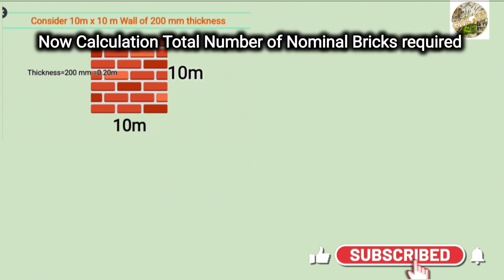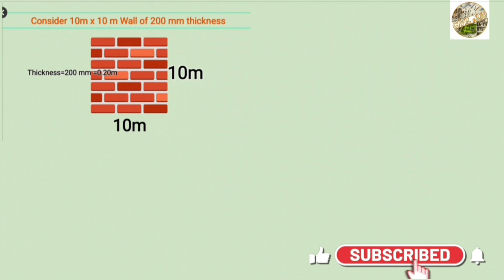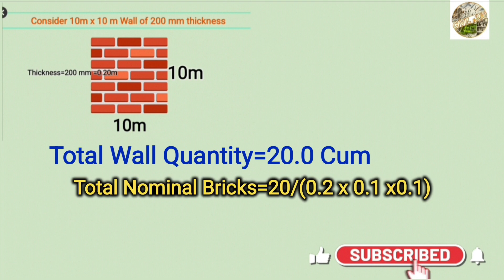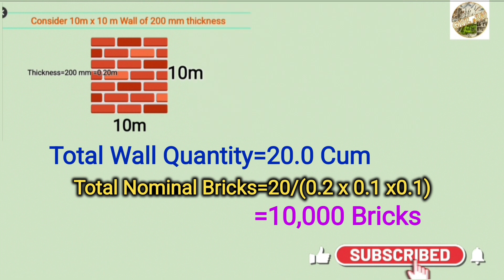Now we will calculate the total number of nominal bricks. The total quantity is 20 cubic meters divided by the nominal brick size: 0.2 m into 0.1 m into 0.1 m. We will calculate the total number of bricks using 200 mm into 100 mm into 100 mm.